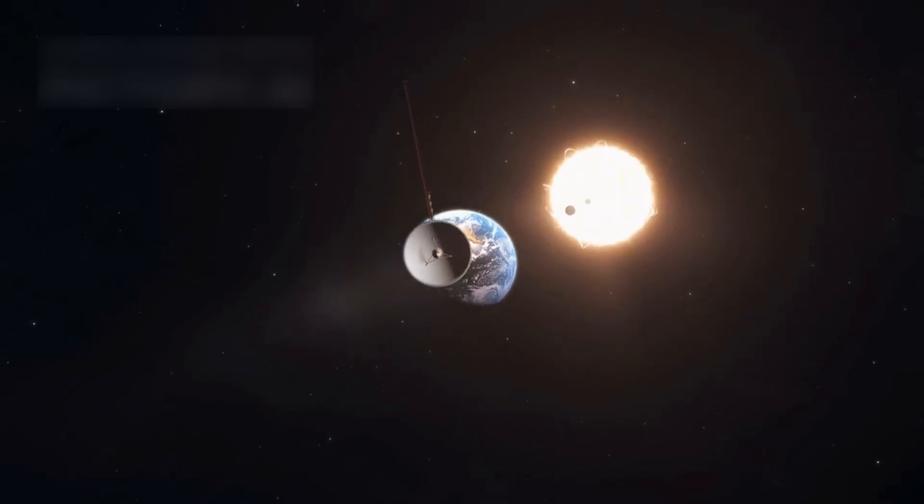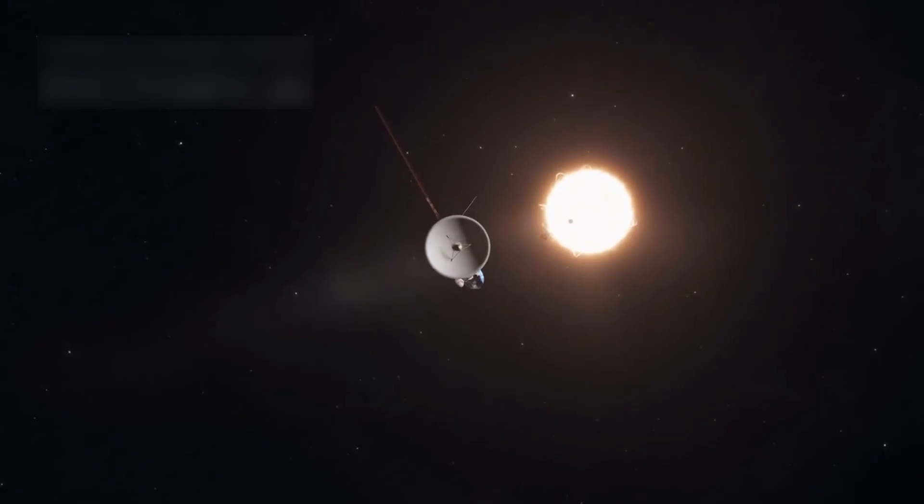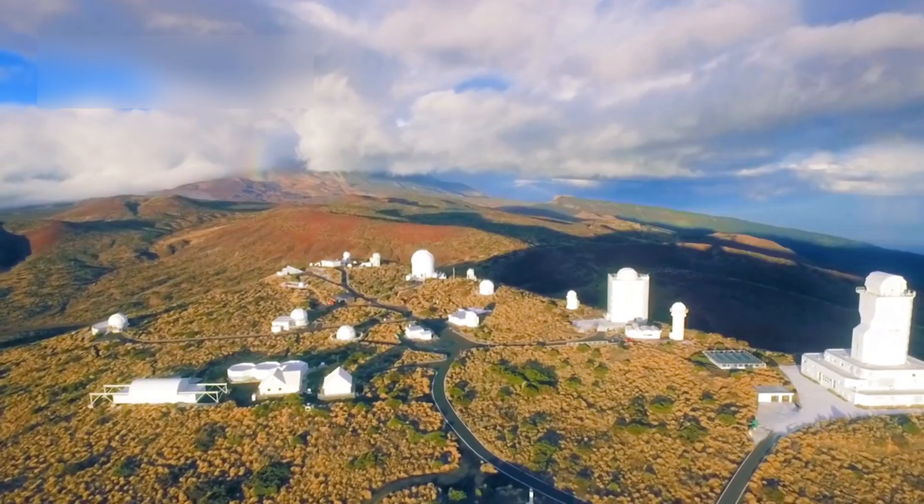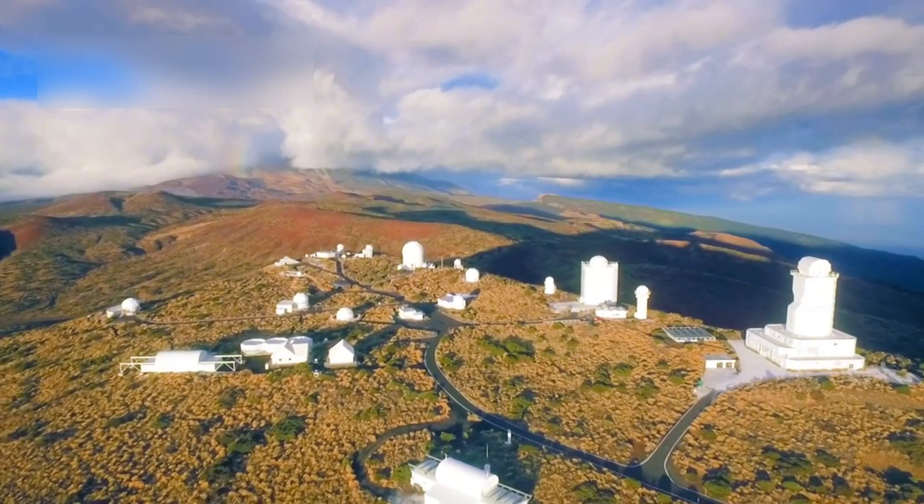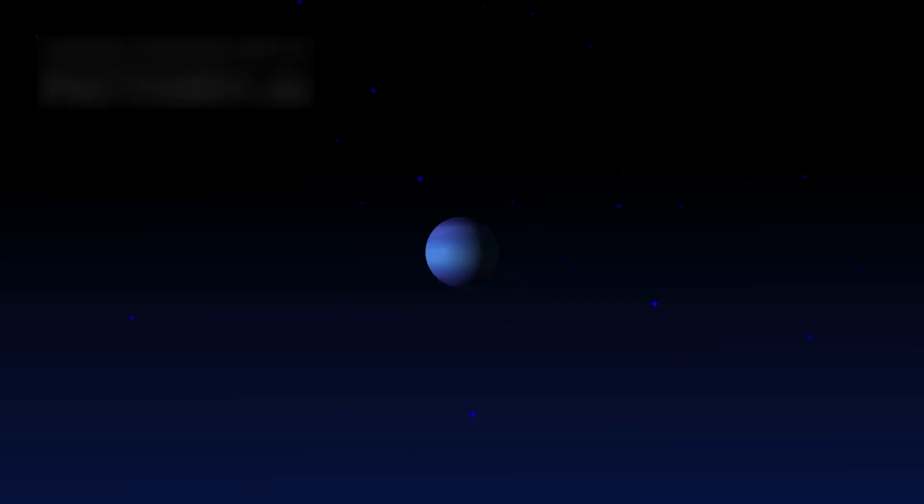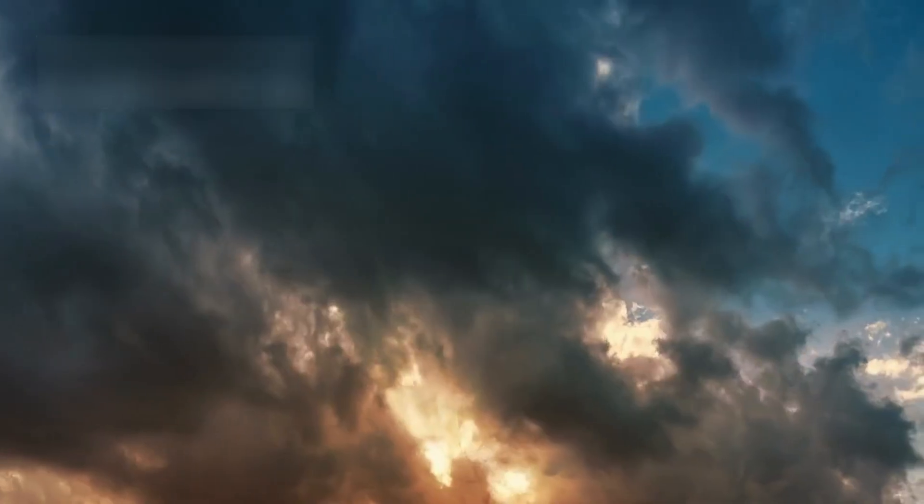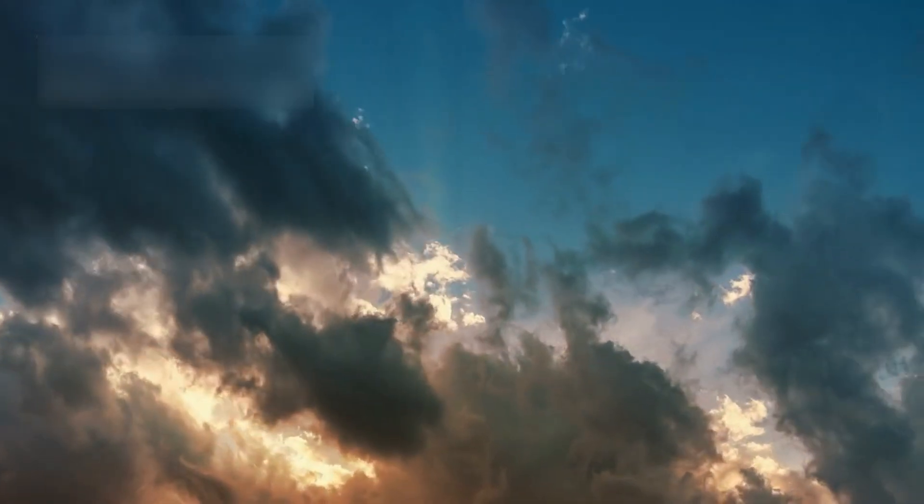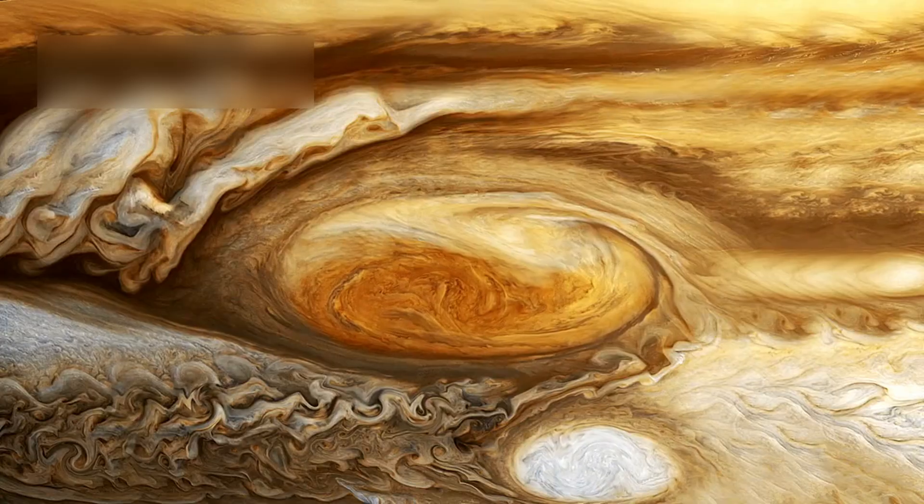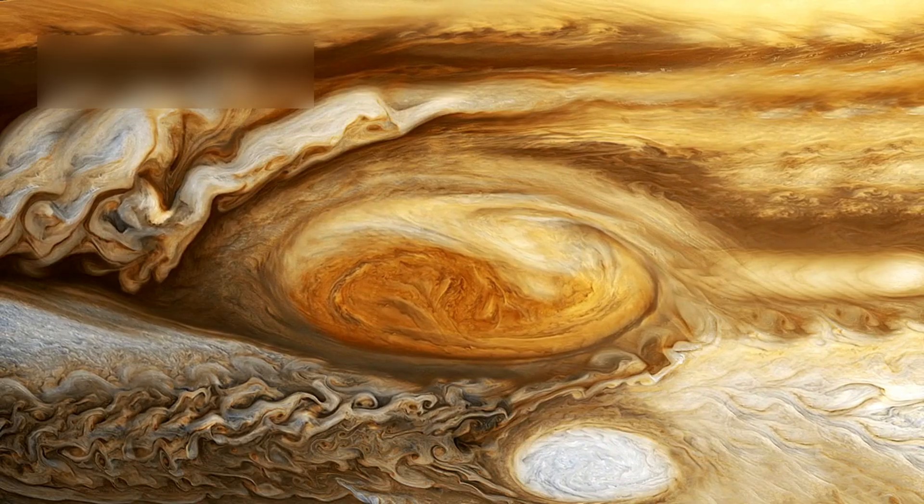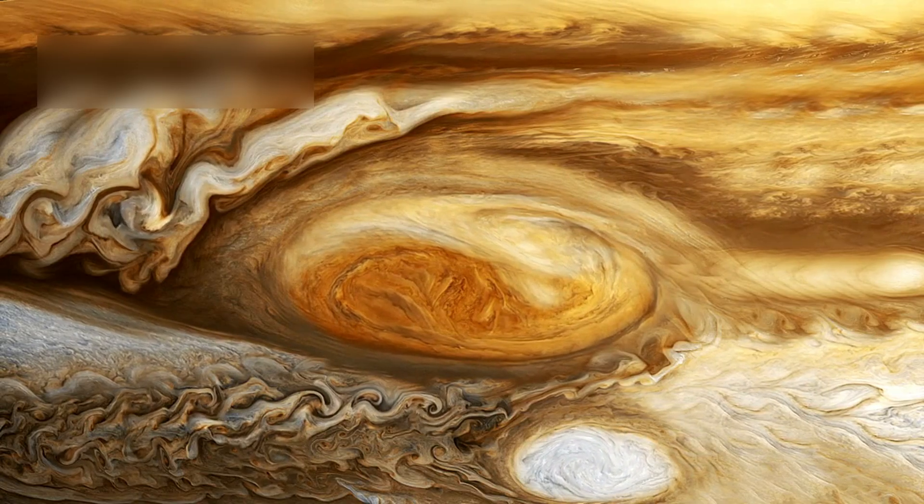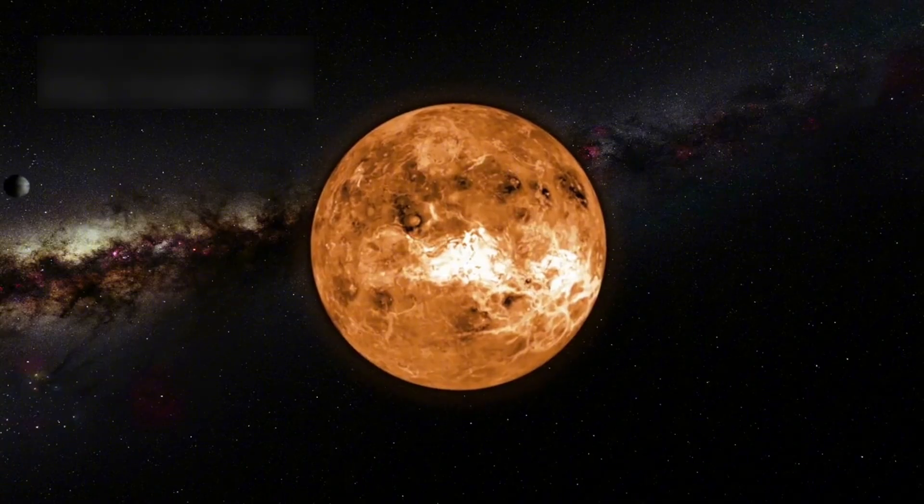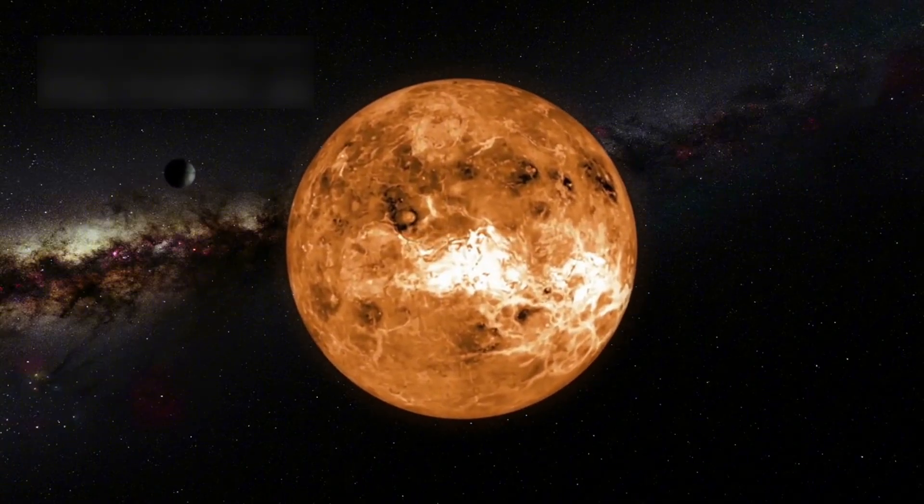As Voyager 2 drifted farther into the solar system, it kept recording amazing scenes. Every close pass brought new surprises in the form of images and signals. It passed by Neptune and caught the first clear look at the great dark spot. This massive storm churned through the planet's atmosphere like a whirlwind. The storm looked similar to Jupiter's red spot, but more mysterious in color. The planet's deep blue glow was captured in sharp, unforgettable detail.